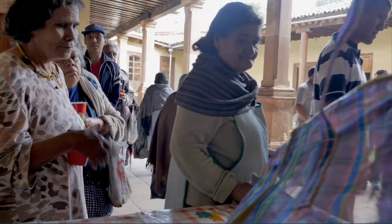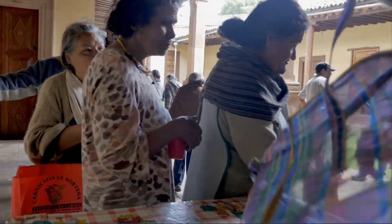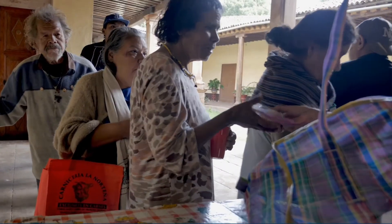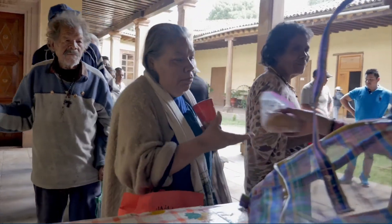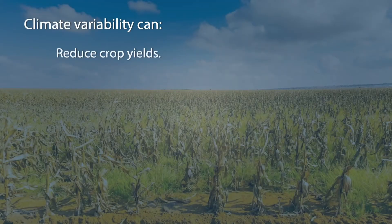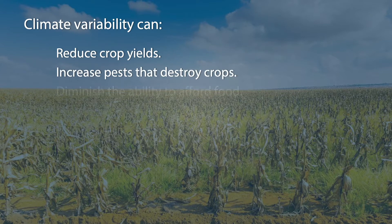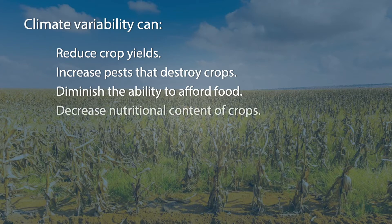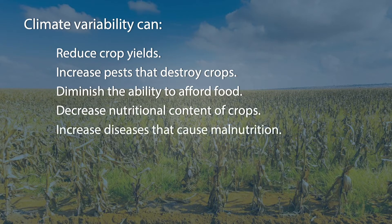All of this affects food security and nutrition around the world, in rural and urban areas. Climate variability can influence all dimensions of food security. It can reduce crop yields and increase the incidence of pests that destroy crops. It can diminish households' ability to afford food by reducing their incomes. It can decrease the nutritional content of crops and increase rates of diarrheal illnesses and other diseases that can cause malnutrition. And it can lead to sudden spikes in food prices.